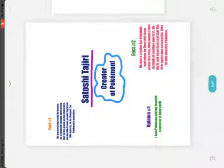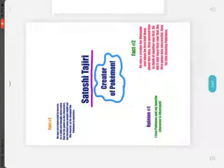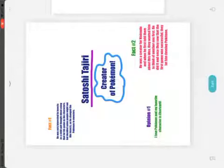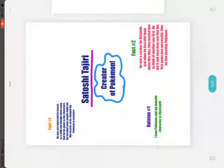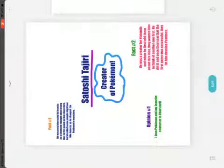Around the sides you're going to put some different things. You're going to want to put some facts about why your person is so famous. My fact one was: he was very interested in insects as a child and thought about using them as characters for his game, but decided some people might not like insects so he changed the Pokemon to monsters. Fact two: he was a creator for Nintendo and when he first told them about his idea they wanted him to think of another one first. He did it, and once they saw that the first game was successful they let him develop Pokemon.